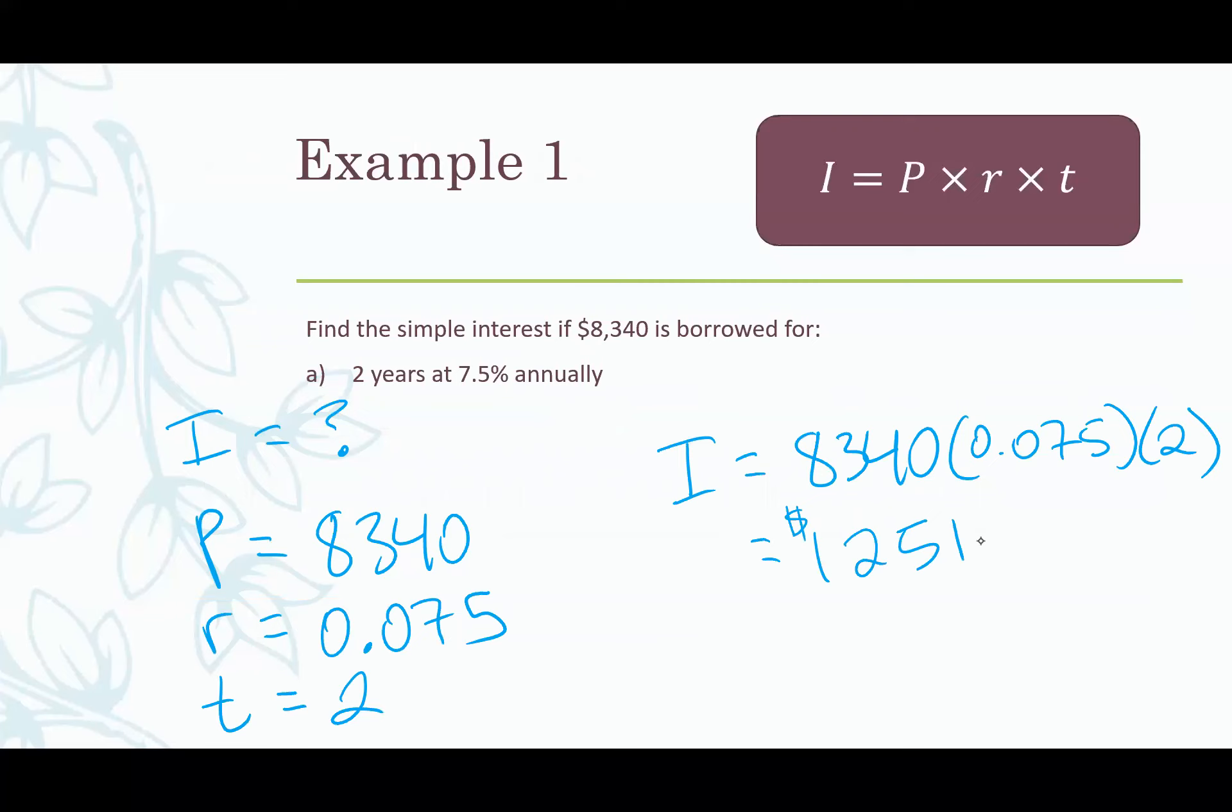A couple examples. Find the simple interest if $8,340 is borrowed for two years at 7.5% annually. So reminder, the word annual means once a year and the interest rates are often given per year. To calculate this we use the formula above, I equals P times r times t, and we just list the variables that we know. So do we know I? Do we know how much interest there is? No. That's what we're trying to find. So that's our question mark.